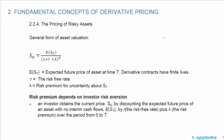Continuing with the fundamental concepts of derivative pricing, we're going to look at the pricing of risky assets. The general form of asset valuation: the spot price equals the expected future price of the asset at time t — derivative contracts have finite lives. R is the risk-free rate and this symbol is the risk premium for uncertainty about the spot price. This is a present value — present value equals future value divided by (1 + r) to the t — except that we're including a risk premium for uncertainty about the spot price. The risk premium depends on investor risk aversion. An investor obtains the current price S0 by discounting the expected future spot price at time t by the risk-free rate plus the risk premium over the period from 0 to t.